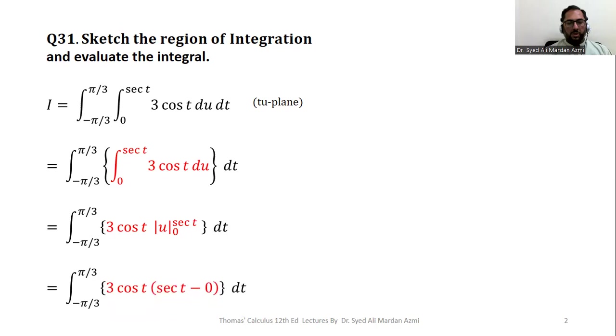So we have 3 cos(t) times sec(t) minus 0. Opening the brackets, we have 3 cos(t) times sec(t). Cos(t) and sec(t) will be cancelled out with each other, and we are left with 3 only.